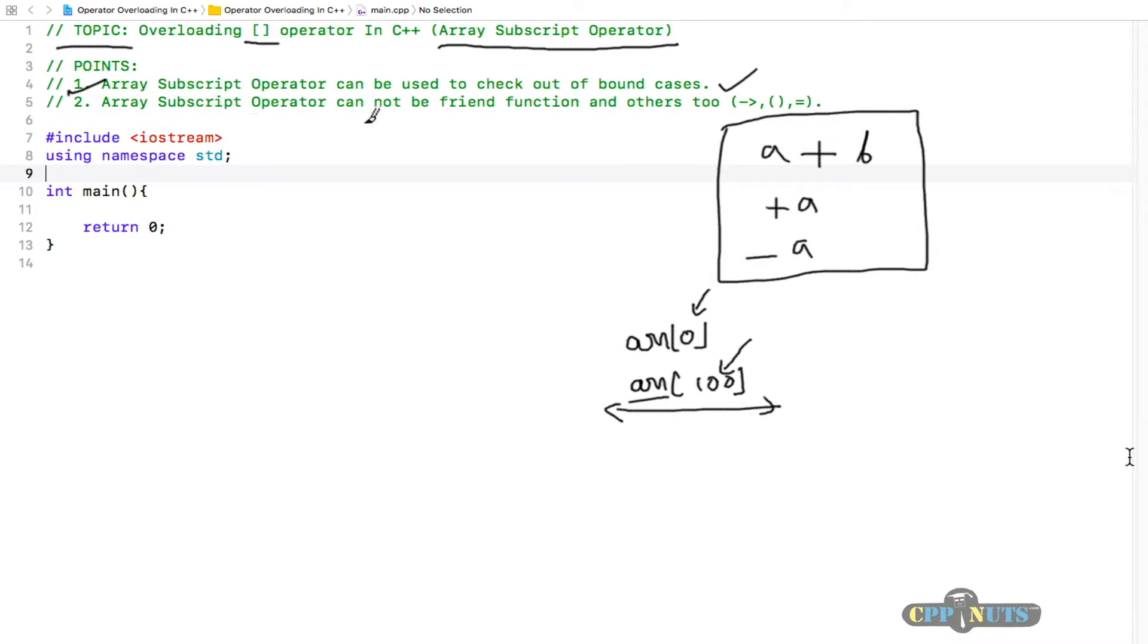Others too means the arrow operator, the round bracket function call operator, and the assignment operator. We cannot overload these operators using friend functions. You can create any function outside your class and declare that function as friend.